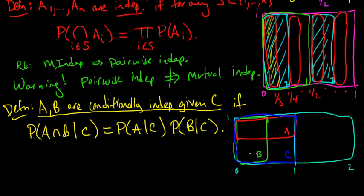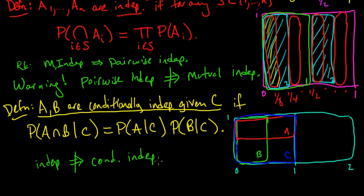So in other words, mutual independence does not imply conditional independence in general. These are a few definitions of different types of independence, and next we're going to look at an example that will illustrate all three of these nicely.